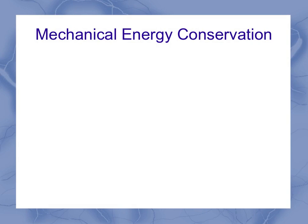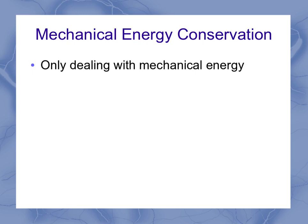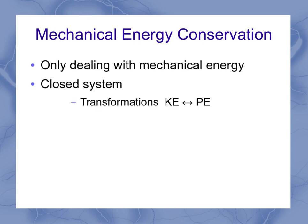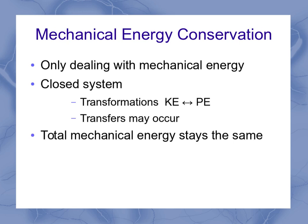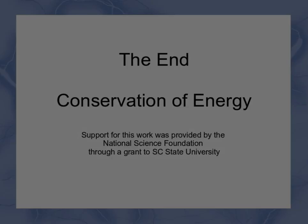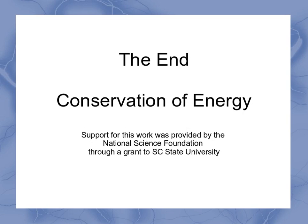This semester we focus on mechanical energy conservation. So if we say something is a conservation problem in physics one, we're talking about mechanical energy. When we look at a closed system, we can have transformations between kinetic and potential, or transfers of energy between individual objects in the system. The total amount of mechanical energy on all the objects in the system stays the same — that is what we mean by conservation of mechanical energy. We're going to have to look at some problems to help you understand it a little more.